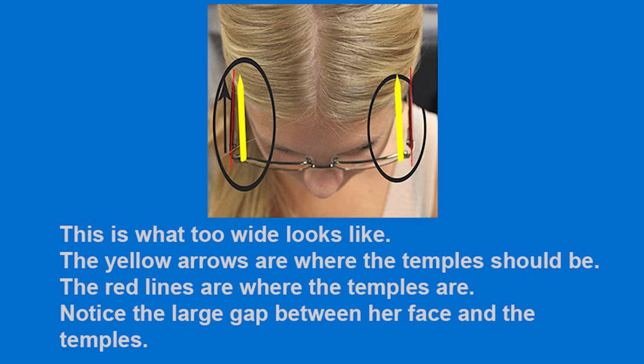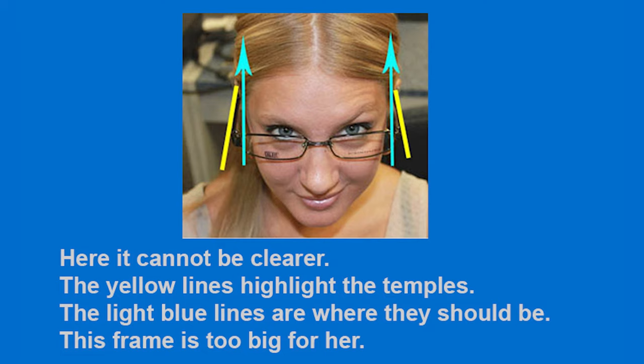This is what too wide looks like. The yellow arrows are where the temples should be. The red lines are where the temples are. Notice the large gap between her face and the temples. Here, it cannot be clearer. The yellow lines highlight the temples. The light blue lines are where they should be. This frame is too big for her.